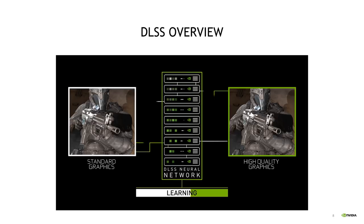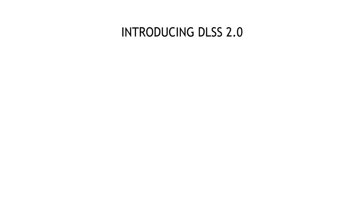The first generation of DLSS was visionary and revolutionary — it's the first ever deep learning algorithm shipped in games. But we know we can still do better. We want better image quality, better performance, faster inference, and better generalization so we don't have to train DLSS per game. So the research definitely continued non-stop. Over the last year, we've improved every aspect of DLSS — from training methodology, the loss function, the dataset, the algorithm, how the algorithm interacts with the game engine — to ultimately redesigning the entire architecture. We're calling this reinvented architecture DLSS 2.0.